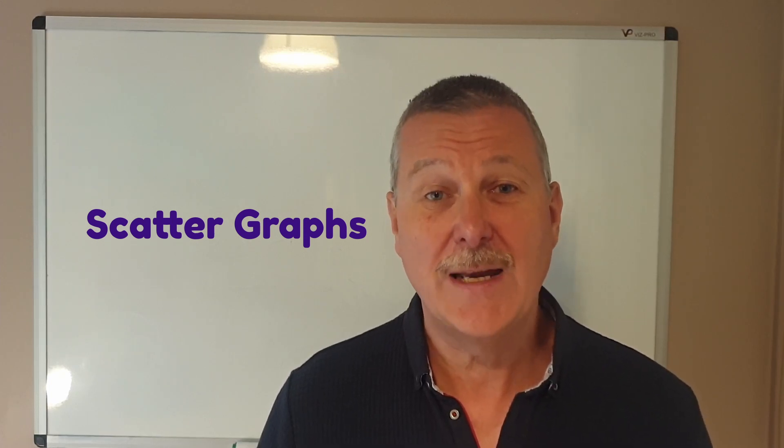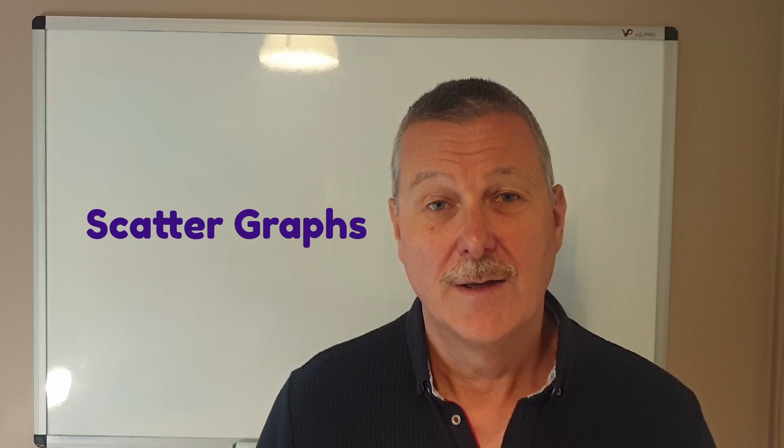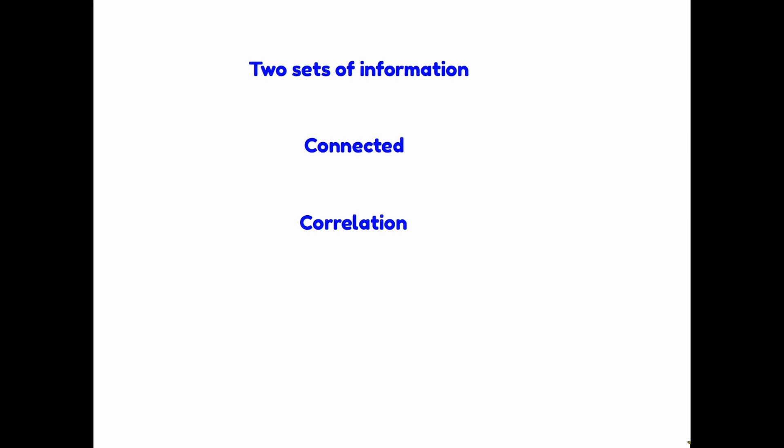Before we start looking at any examples, let's figure out exactly what a scattergraph is designed to tell us. We use a scattergraph when we have two sets of information. What we are trying to do is figure out whether or not these two sets of information are connected. The fancy word that we use for connected is correlation. We are trying to find out whether the two sets of information we have been given are correlated in any way.